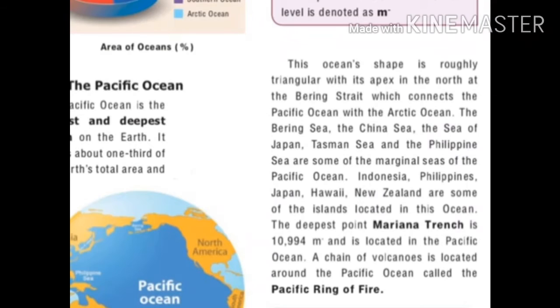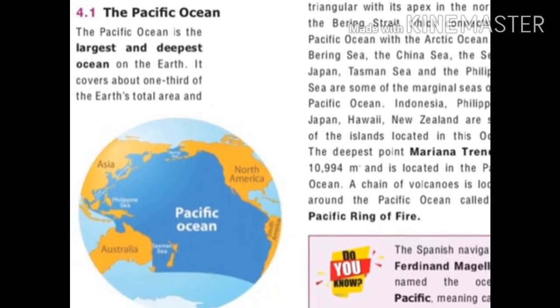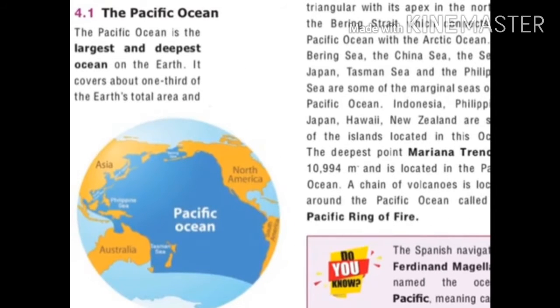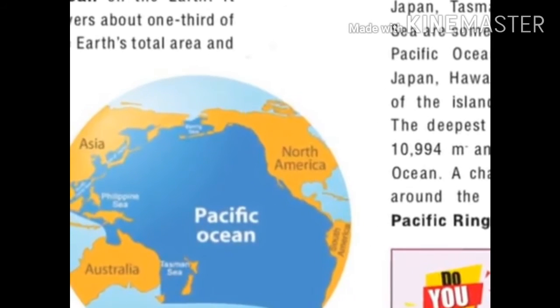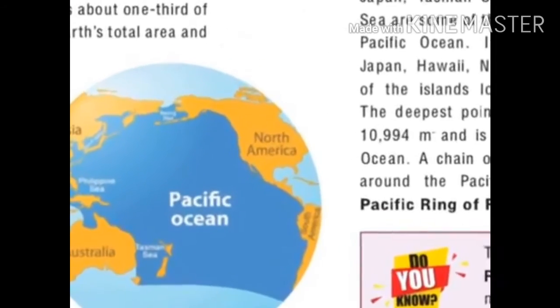The shape of the Pacific Ocean is roughly triangular with its apex in the north. The Bering Strait connects the Pacific Ocean and the Arctic Ocean. The Bering Sea, China Sea, Sea of Japan, Tasman Sea and the Philippine Sea are some of the marginal seas of the Pacific Ocean.